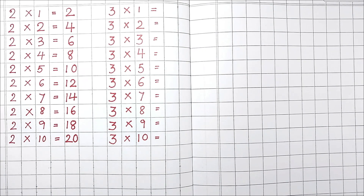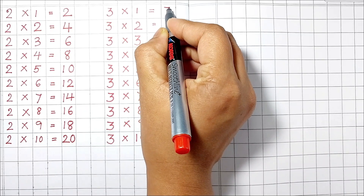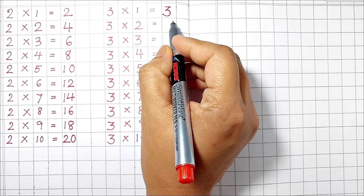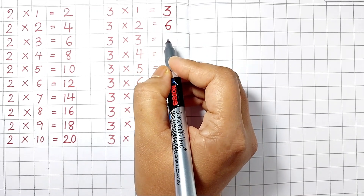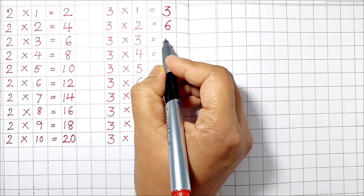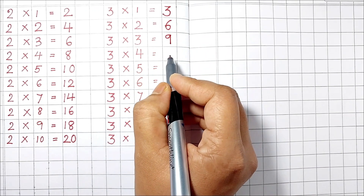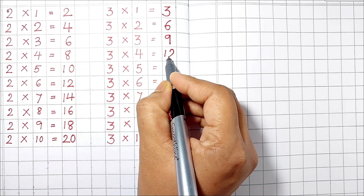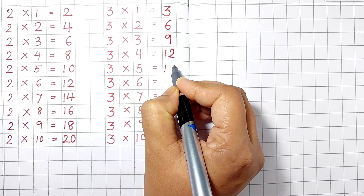Table of 3. 3 1's are 3. 3 2's are 6. 3 3's are 9. 3 4's are 12. 3 5's are 15.